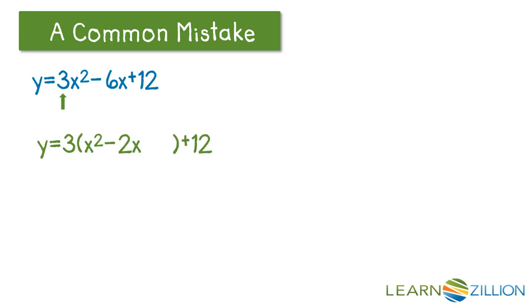Now we can proceed with adding a number inside the bracket and subtracting a number outside. Take half of negative 2, that's negative 1. Then square it, we get 1. We have a number outside here, the 3 that we factored out. So before you subtract, make sure you distribute that. So 3 times 1 is 3, and so you do minus 3.